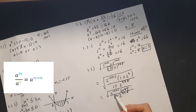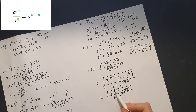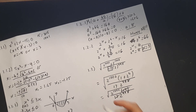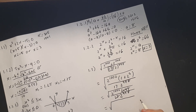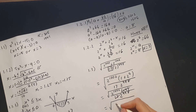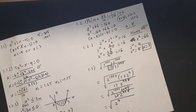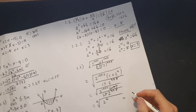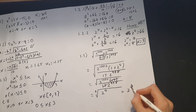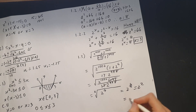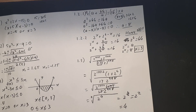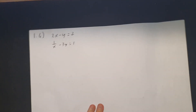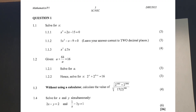The 17s cancel out. From exponent rules with the same base, we subtract: 1002 − 998 = 4, giving √(2^4). Since the square root means power of 1/2, this becomes 2^(4/2) = 2² = 4.